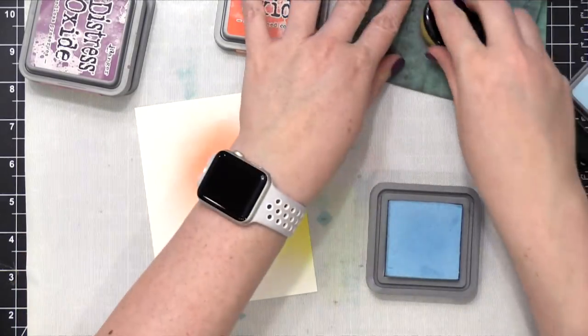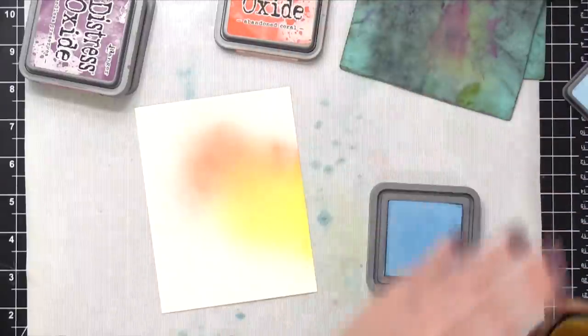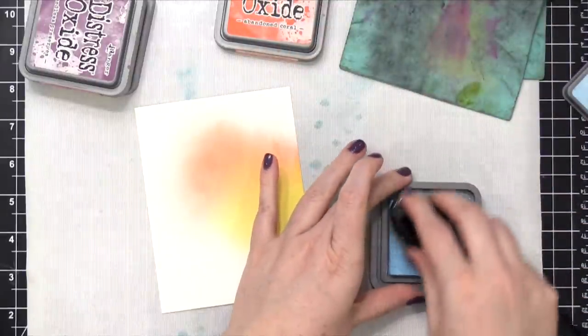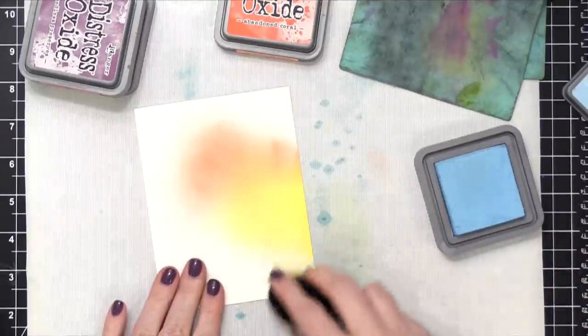And the other thing I noticed is that when I'm applying color to the brush, I really need to swirl it onto the ink pad, and that adds a lot more ink.